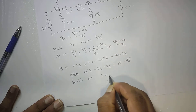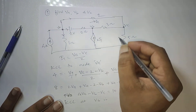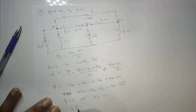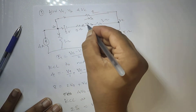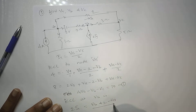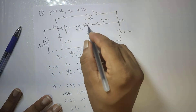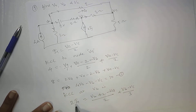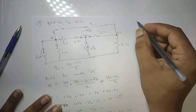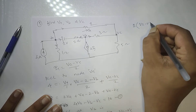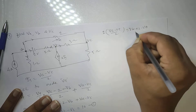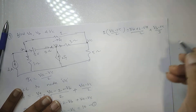Applying KCL at node VB, three branches are connected. The entering current is 2I1. The outgoing branch currents are: VB plus 2 minus VA divided by 2 for one branch, and VB minus VC divided by 3 for another branch. Substituting I1 equals VA minus VC by 2, the equation becomes: 2 times (VA minus VC by 2) equals (VB plus 2 minus VA) by 2 plus (VB minus VC) by 3. The LCM here is 6.